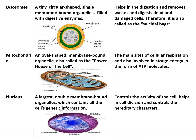Our next cell organelle is lysosomes. These are very tiny, circular-shaped, single membrane-bound organelles filled with digestive enzymes. They help in digestion and remove all waste, digesting dead and damaged cells. Whenever any part inside the cell is dead, injured, or whenever a cell is old or injured, lysosomes rapidly destroy those organelles or cells. That is why we call them suicidal bags. They also help in the formation of bones by digesting cartilages.